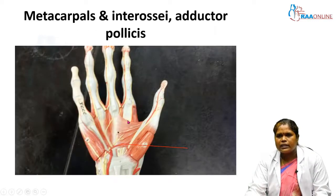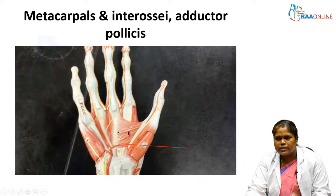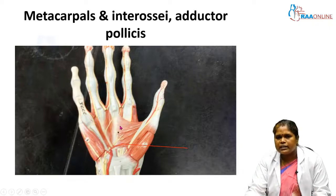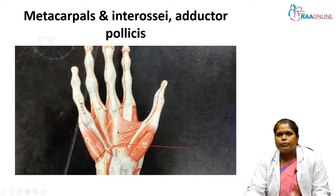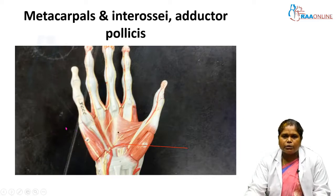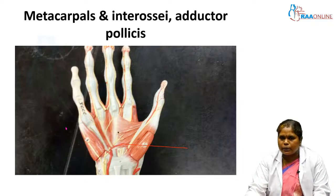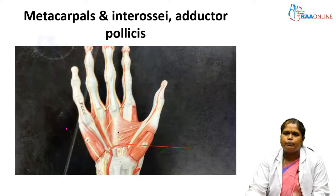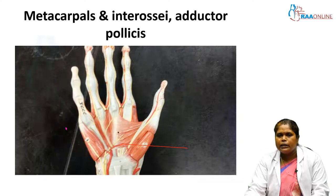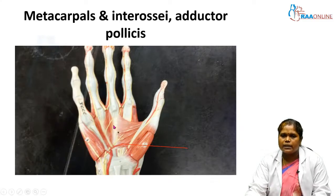Once we reflect the long flexor tendons we reach the deepest layer — the metacarpals. Here we can see the metacarpals and in between them the interosseous muscles, both palmar and dorsal interosseous, along with the transversely running adductor pollicis muscle. So to summarize: skin and superficial fascia, then deep fascia, then neurovascular bundle with superficial palmar arch and digital nerves, then long flexor tendons, and deepest are the metacarpals and interosseous muscles.